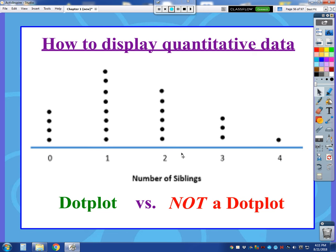Now we have quantitative data here, the number of siblings: zero, one, two, three, four. We could talk about the average number of siblings that a person would have based on this data.